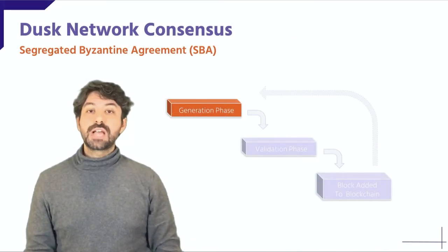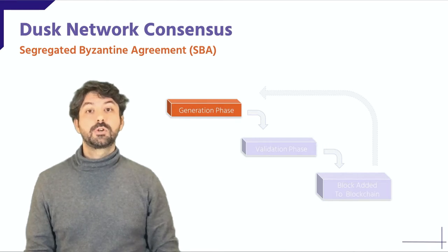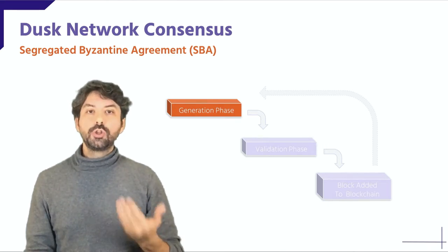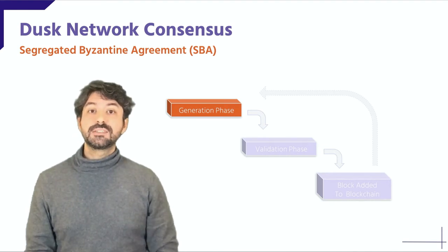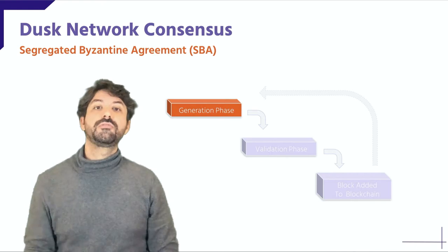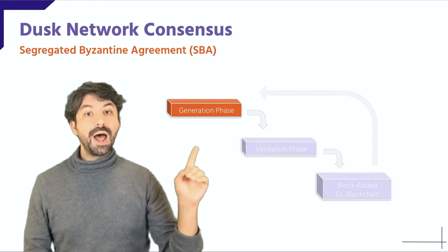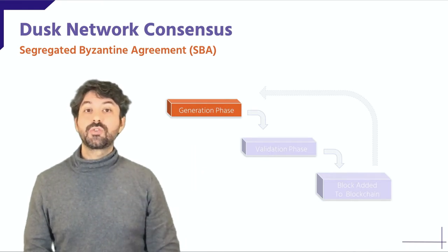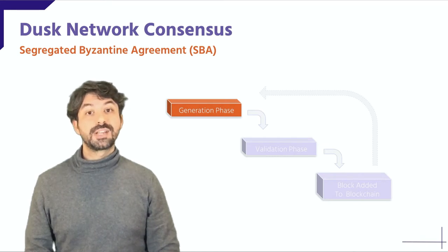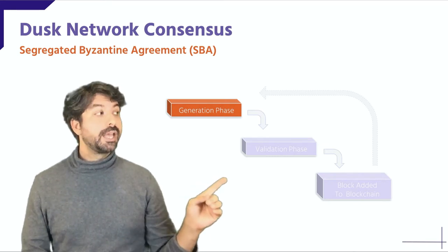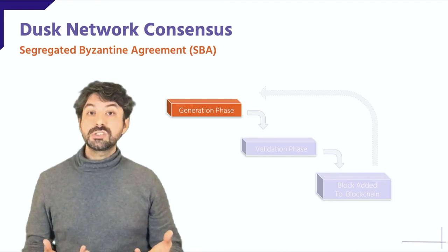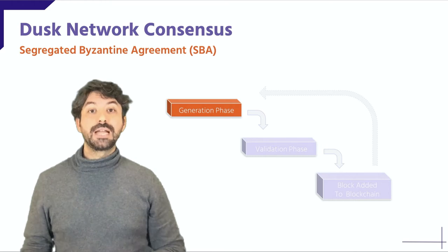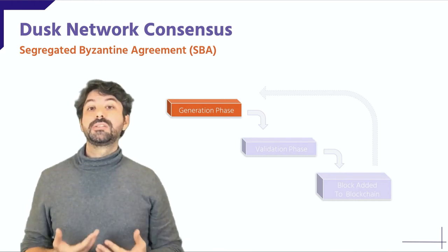At its core, a consensus algorithm is a protocol that aims to achieve a common agreement — consensus — among all nodes about which block of transactions gets processed at each round. Segregated Byzantine Agreement foresees two different phases during each round: one is the generation phase, where potential round leaders submit their own block of transactions to the network; the other is the block validation phase, where a committee of validators, called provisioners, elect the winning block to be added to the blockchain in a permanent and final manner.